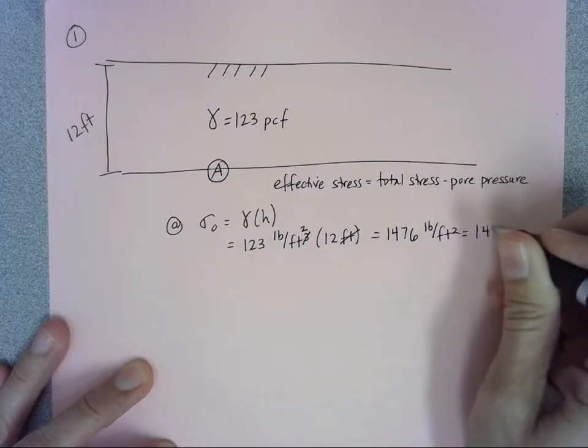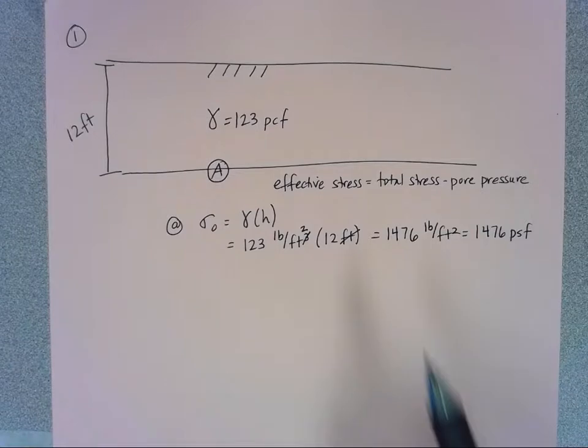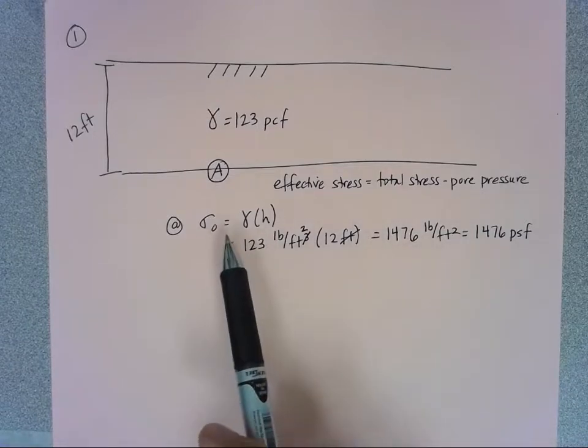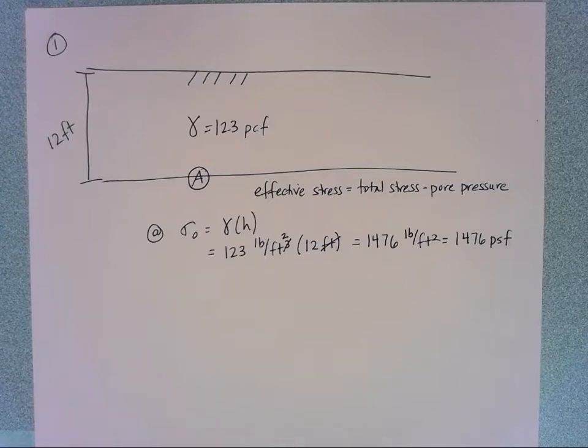When I go ahead and do that math I wind up with 1476 and I can write that as pounds per feet squared or I could write it 1476 PSF for an abbreviation and we know that our units for these vertical effective stress, it's always going to give me in pounds per square foot.